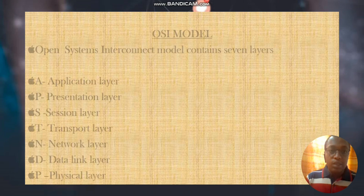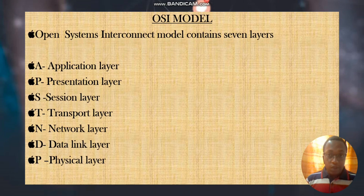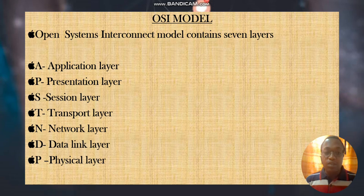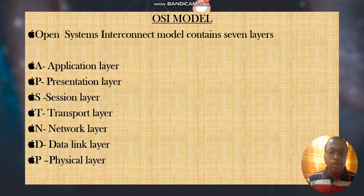The OSI model stands for the Open Systems Interconnect model and contains seven layers, which are abbreviated by the acronym 'All People Seem To Need Data Processing' — that is: Application layer, Presentation layer, Session layer, Transport layer, Network layer, Data Link layer, and Physical layer. This acronym helps us remember the layers from first to last.